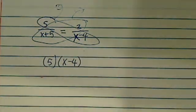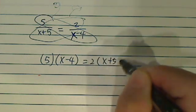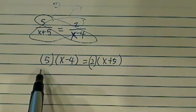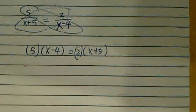Which is 5 times x minus 4 is equal to 2 times x plus 5. I don't know about you, I don't like fractions. The first thing I see about rational equations is I do the butterfly and get out of the fractions first.